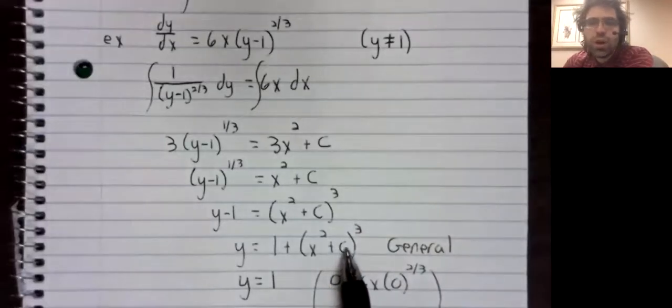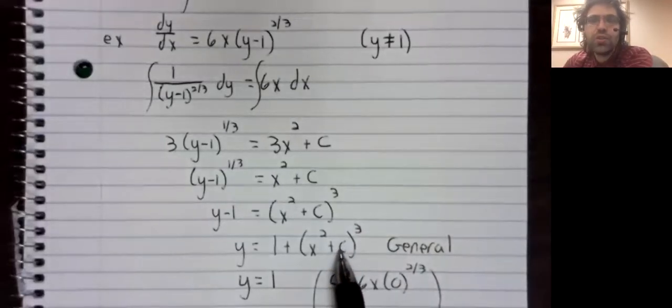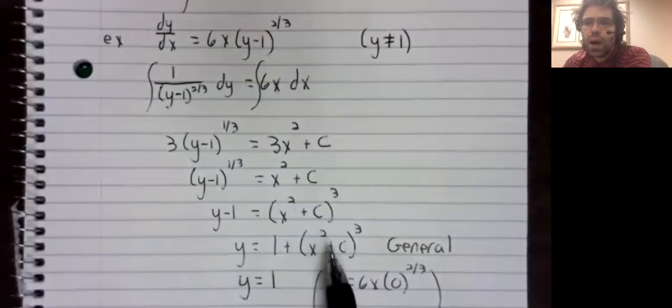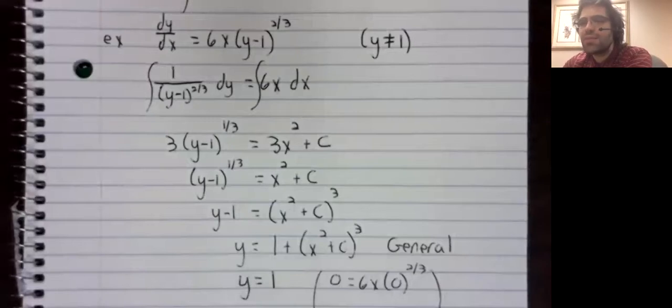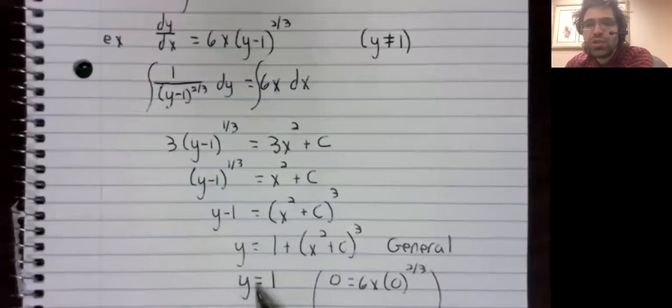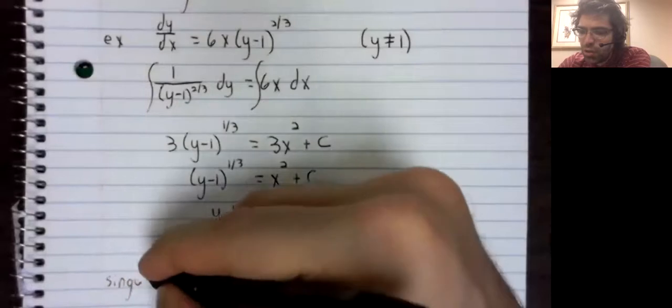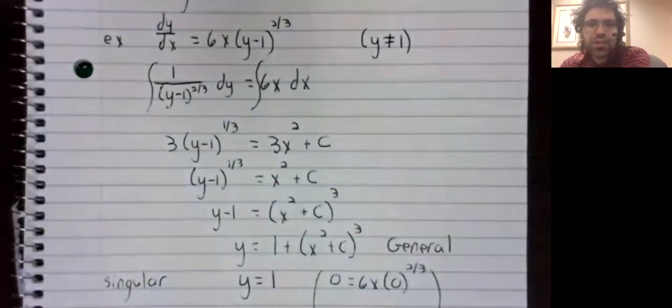There is no constant C you can pick here to make this be the constant function 1. If you get a stray solution that does not have the form of a general solution, it's called singular.